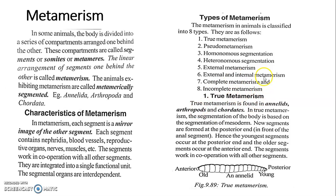True metamerism is found in annelids, arthropods, and chordates. In true metamerism, the segmentation of the body is based on the segmentation of the mesoderm. During development, the mesoderm is divided into different segments.